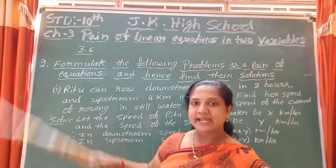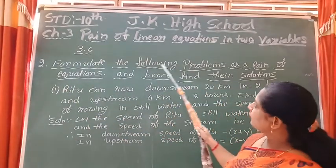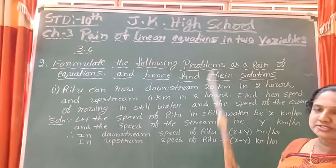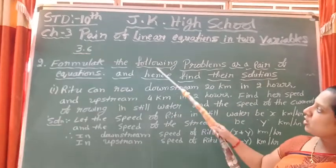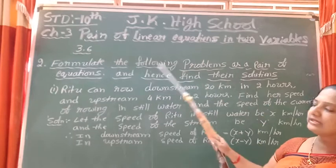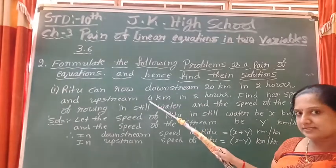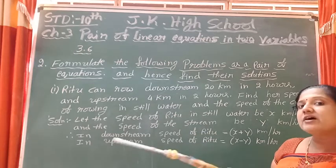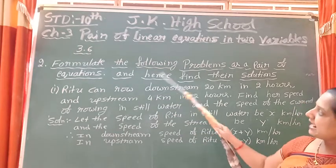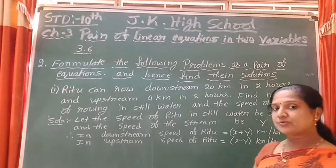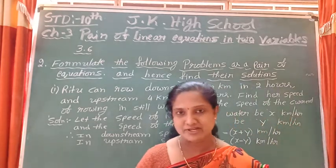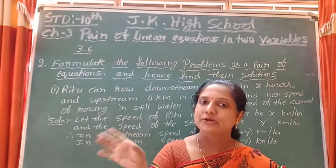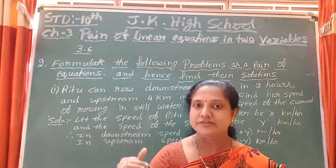The second main heading is: formulate the following problems as a pair of equations and hence find their solutions. They gave statement problems. You have to read the statement, understand it, then convert that statement into the form of linear equations in two variables.